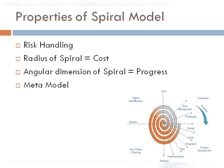जहाँ भी आप risk word सुनेंगे वहाँ पे हमेशा spiral model होगा, क्योंकि spiral model की USP है कि वो हमेशा early stages में risk को analyze कर लेता है और project में later stages में कम से कम amount of risk available होते हैं।